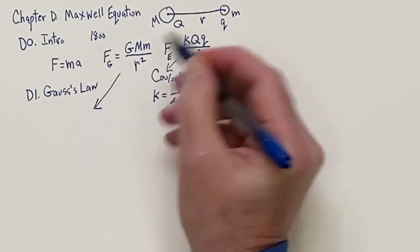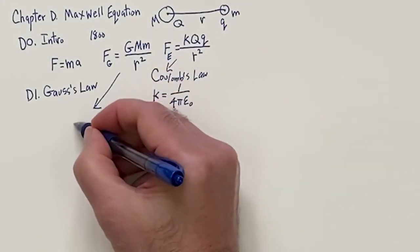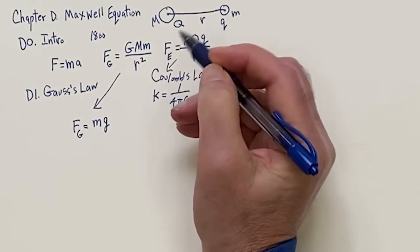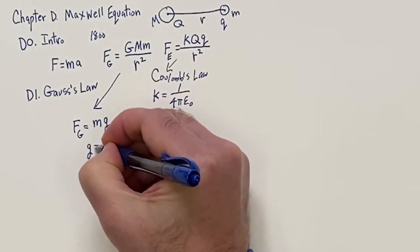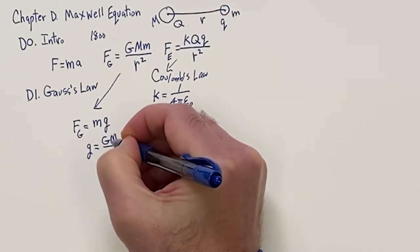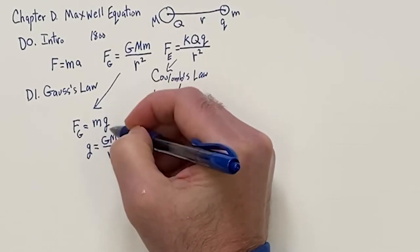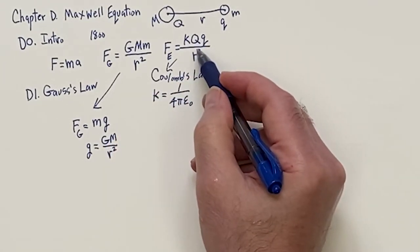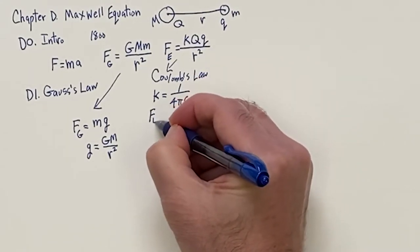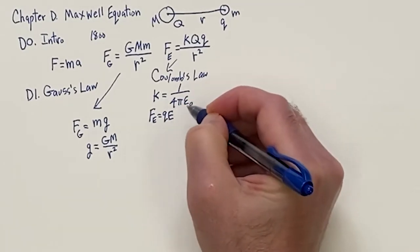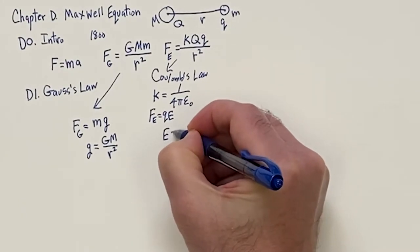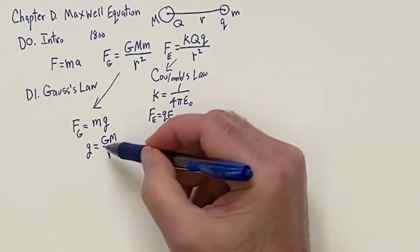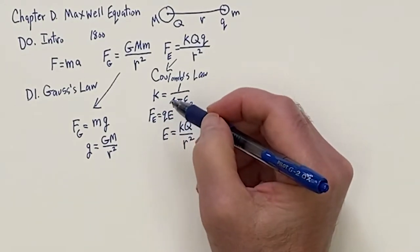If you take the M out of the gravitational force, you have little m times everything else which we call little g. So g is a force field — when you put a mass in it, it's attracted down toward the earth. With the electric force you can do the same thing: take the q out and have q times some E, where E is analogous to g. The electric field would be K times big Q over R squared. These are force fields — the electric field and the gravitational field.